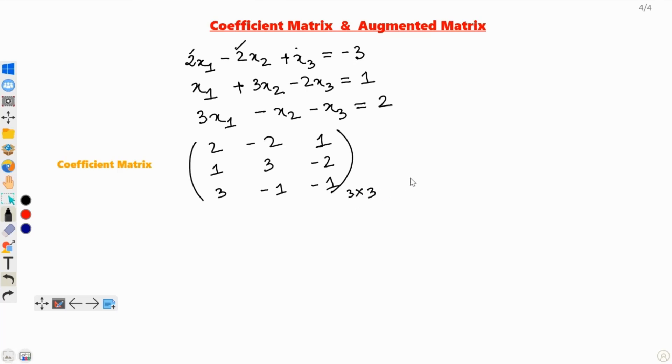Working with the coefficient matrix is nice sometimes, but you really can't solve the linear system here, because we don't know what these values are. We don't know this. We know them in this linear system, but we haven't input this data into the matrix form yet, correct?